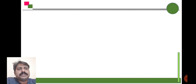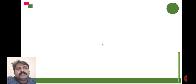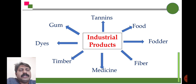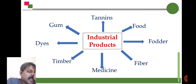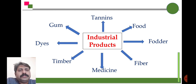In today's lecture we are going to discuss the next important plant resources — those that provide raw material to industries. These include fiber, medicine, timber, dyes, gum, and tannins, which are all important and essential for the benefit of human beings.